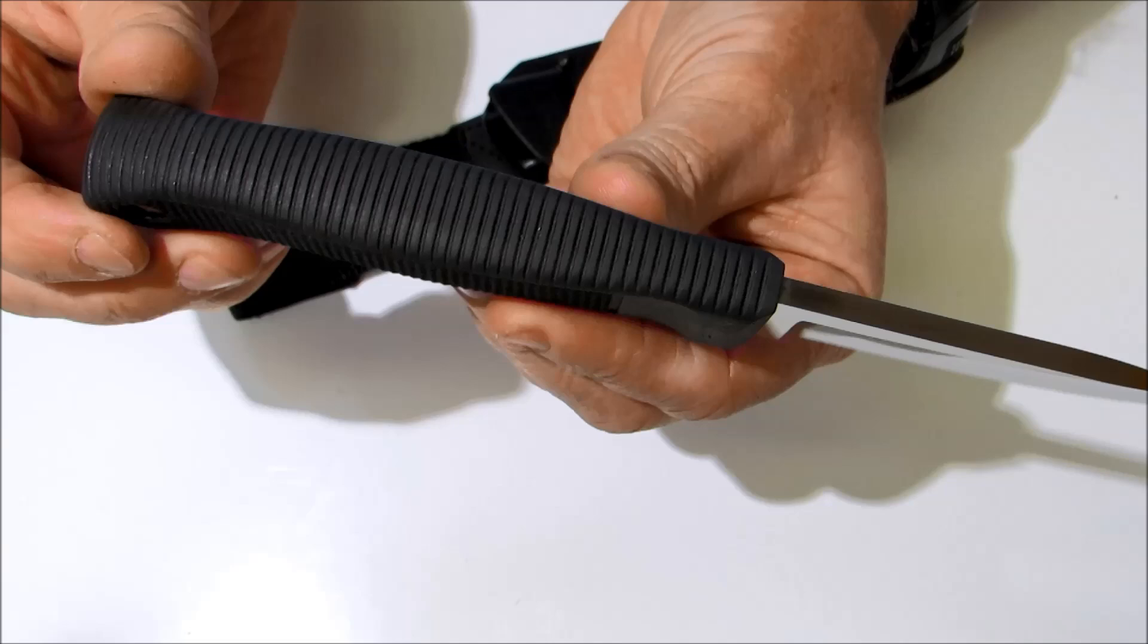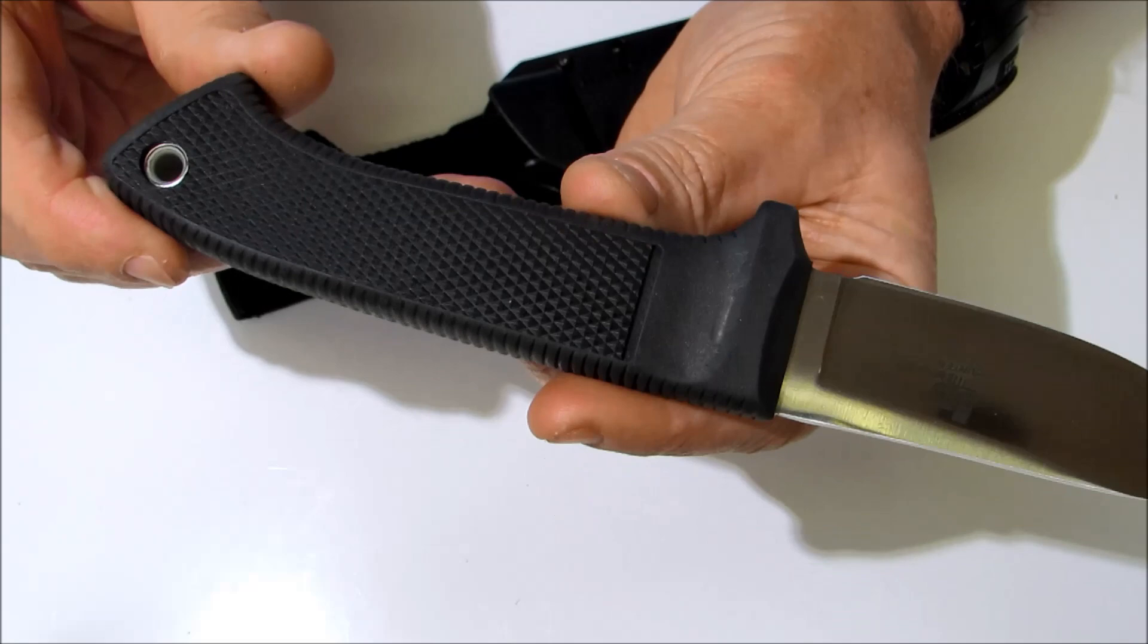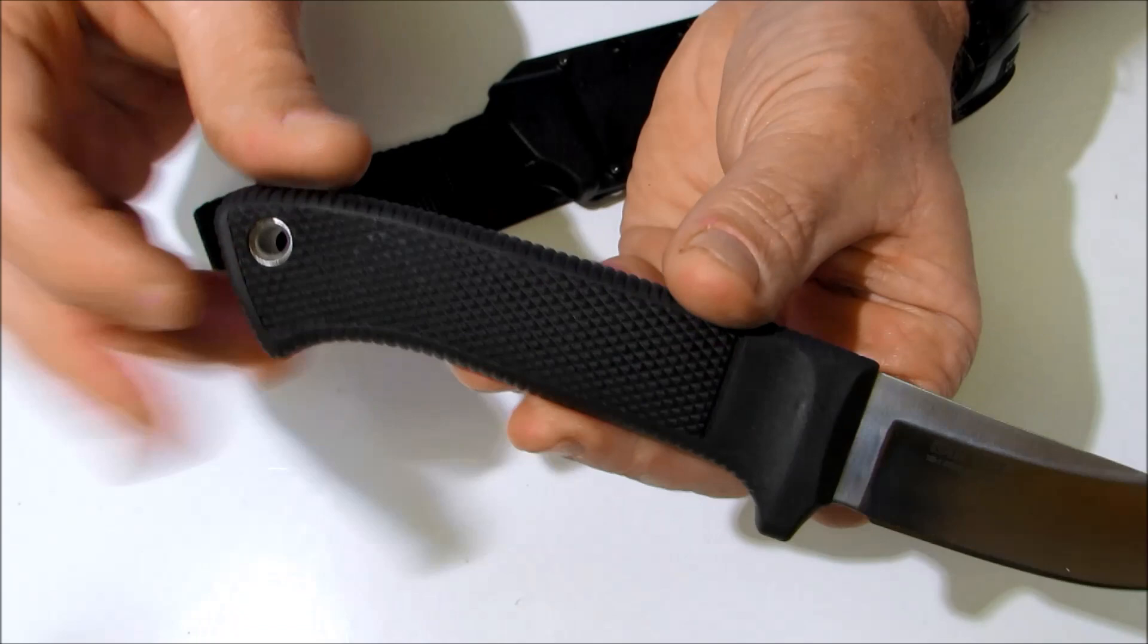The handle is a deeply checkered Kraton rubber. There's also traction ridges all the way down the top part of the handle. It's very grippy material. Traction ridges on the bottom as well.